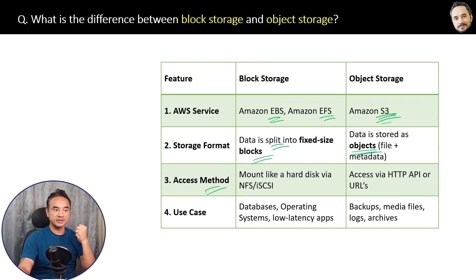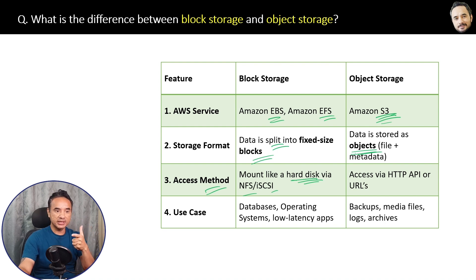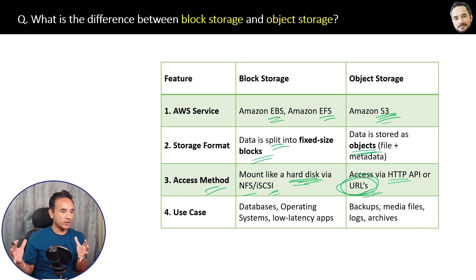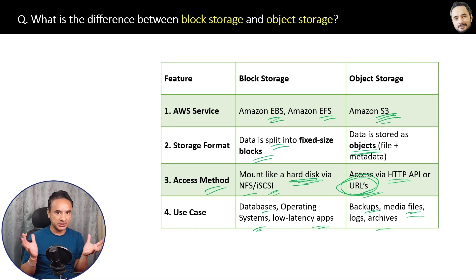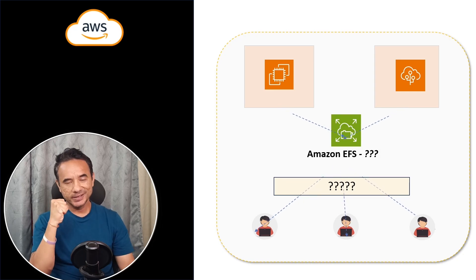For access methods: block storage is mounted like a hard disk via NFS — you access it via file paths, similar to your computer folders. Object storage is accessible via HTTP API or URLs. For use cases: use block storage for databases, operating systems, and low-latency apps. Use object storage for media files, images, videos, and large unstructured files. That is the difference between block storage and object storage.